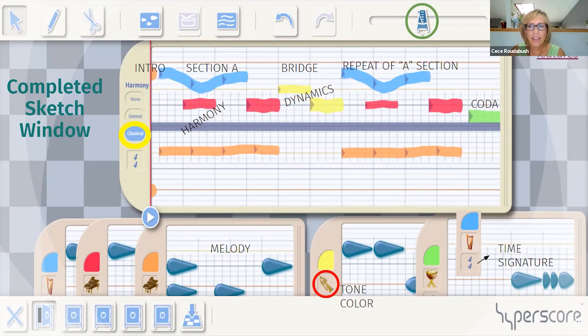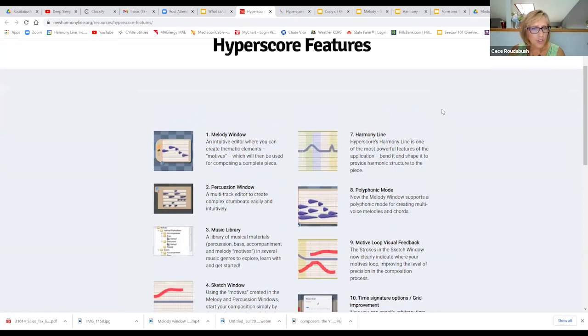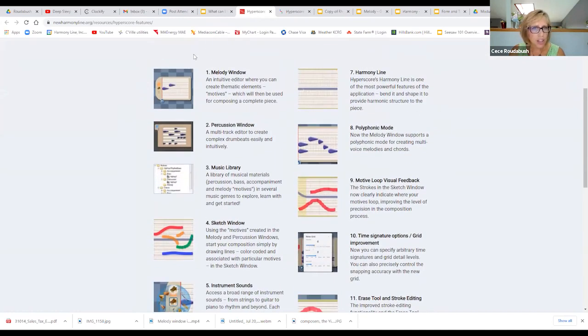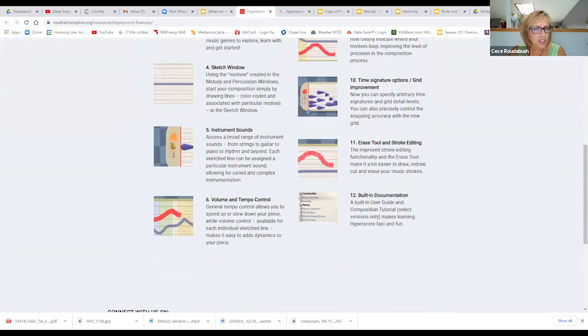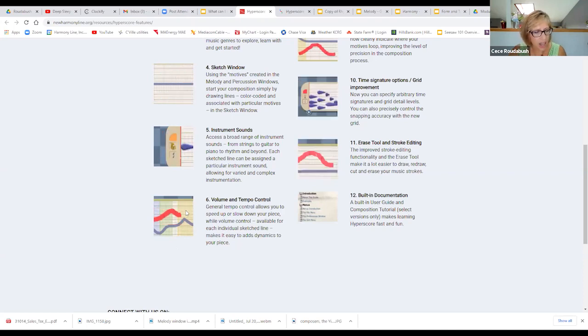This is a part of the help feature in Hyperscore. Peter's showing you things like you have a melody window, percussion, a library of sounds, the sketch window where you make your harmonies. I especially love what Peter did with the instrument sounds - the fact that the visual is there on the screen. I was talking to somebody who teaches English language learners, and Peter and I are talking about a way to potentially put the English word viola or piano so that the students are seeing that.